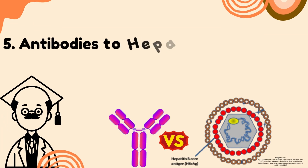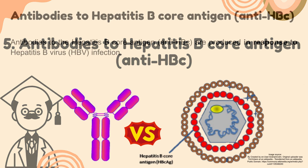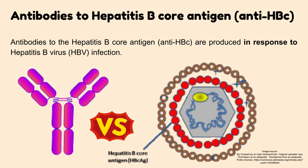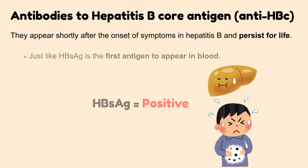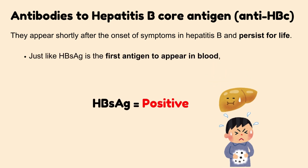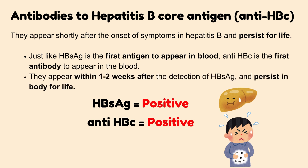Number 5: Antibodies to hepatitis B core antigen, anti-HBc. These antibodies are produced in response to hepatitis B virus infection. They appear shortly after the onset of symptoms in hepatitis B and persist for life. Anti-HBc is the first antibody to appear in the blood, appearing within 1 to 2 weeks after the detection of HBsAg, and persists in the body for life.